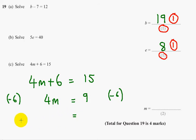So divide both sides by 4. So M must equal 9 divided by 4, which is 2.25.